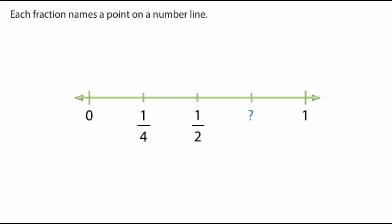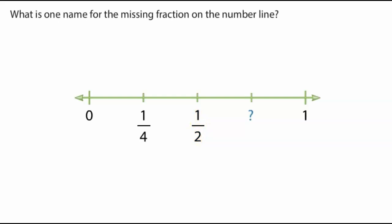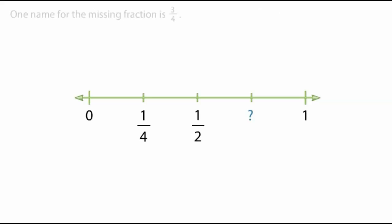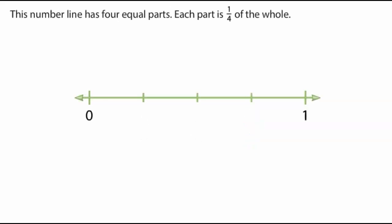Each fraction names a point on a number line. One half is halfway between zero and one. What is one name for the missing fraction on the number line? One name for the missing fraction is three-fourths. This number line has four equal parts, and each part is one-fourth of the whole.